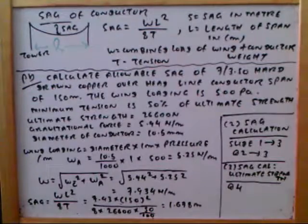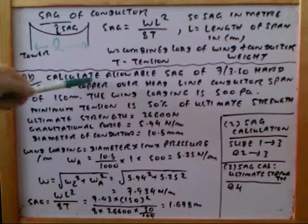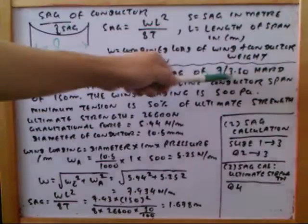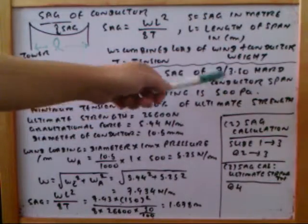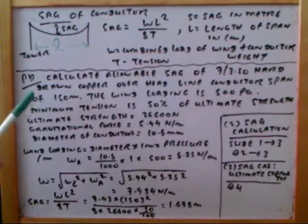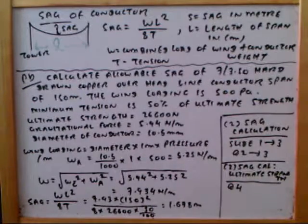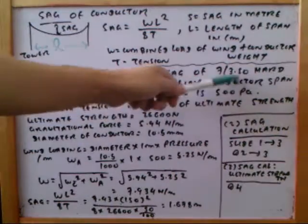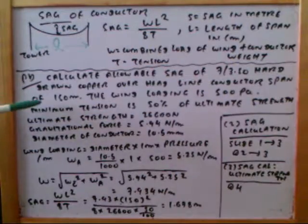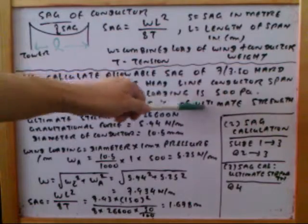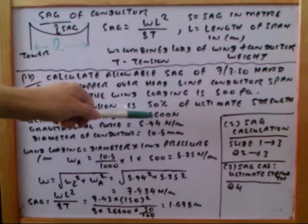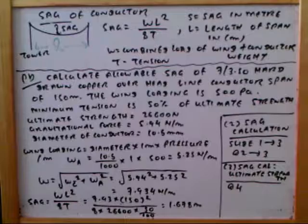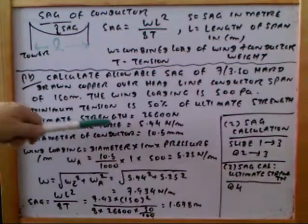We now solve this problem: calculate the allowable sag of a 7/3.5 hard-drawn copper overhead line. The span is 150 meters, the wind loading is 500 Pa, and the minimum tension is 50% of the UTS. The UTS strength is 26,600 newtons.